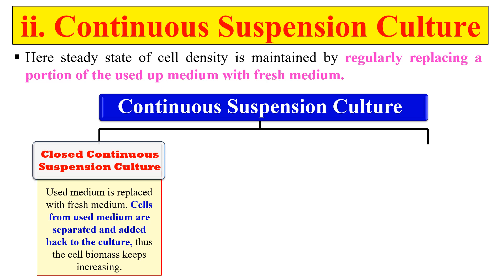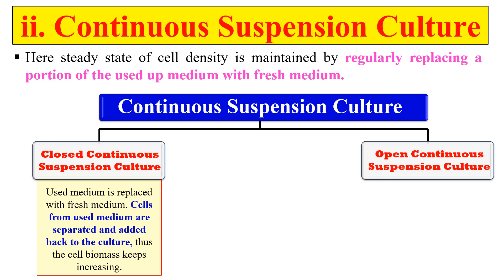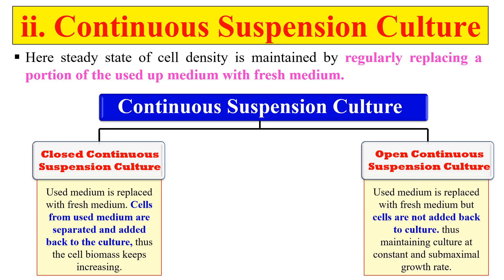The second type is open continuous suspension culture, in which we replace the used medium with fresh medium but the cells are not added back to the culture. The spent media is discarded without filtering and returning the cells. These are the two types of continuous suspension culture.